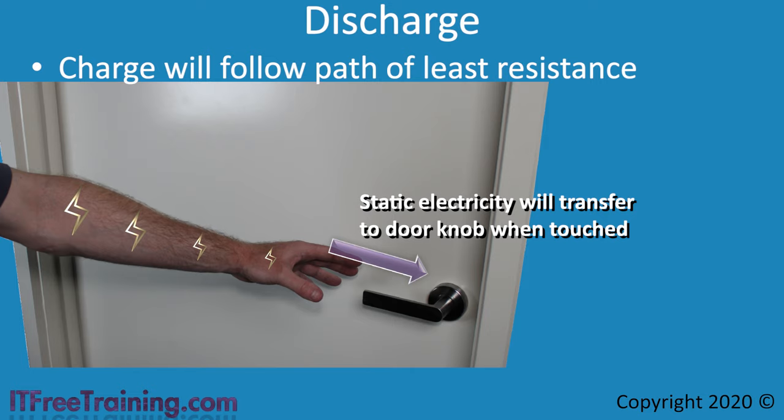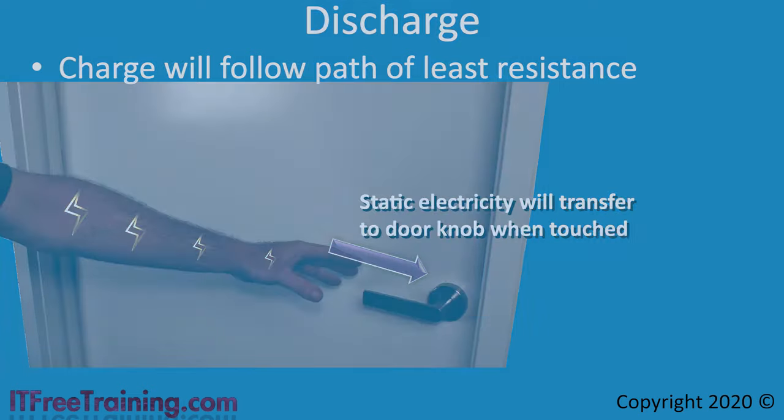To get around this, rather than touching the doorknob, grab the doorknob with your whole hand. This will increase the surface area of contact and thus increase the amount of surface area the static electricity can travel through. This will decrease the chance that you will get an electric shock. Touching a doorknob while statically charged won't cause any problems other than a minor electric shock. However, touching an electrical component can cause damage. Let's have a look at how you can prevent this from happening.